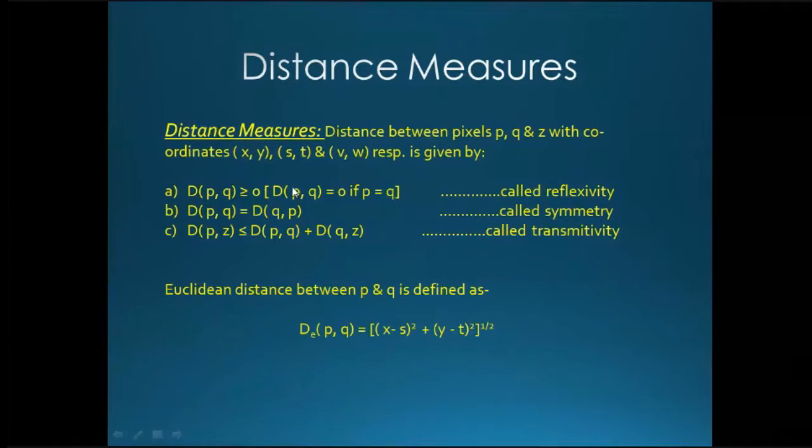What is the meaning of this? For example, if p is equal to q, two pixels are there and two pixels are same, then that time what will happen? The distance between that will be 0. Distance between p and q will be always greater than or equal to 0. It will be greater than 0 when p and q are not same. When p and q are same, then it will be 0. That is a condition here.